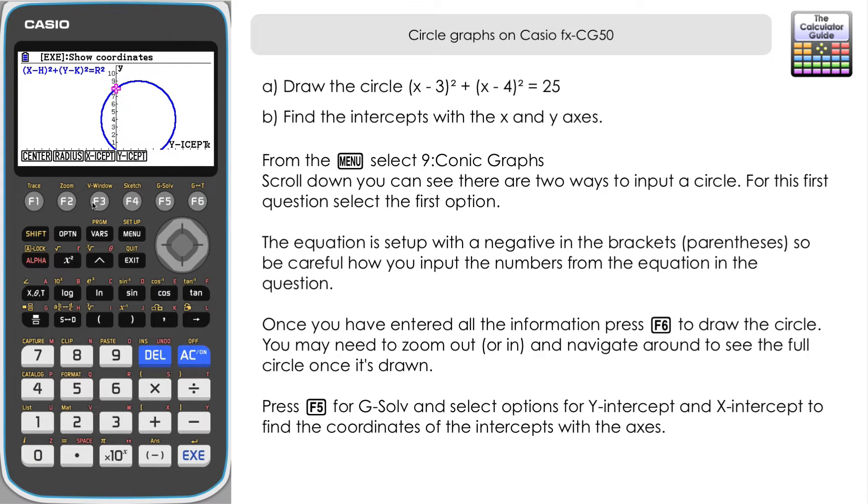Let's press G solve again and do the x-axis, x-intercept. We've got the origin there, x equals 0, y equals 0. And then we've got a second intercept here at x equals 6 and y equals 0. So we've been able to find those.